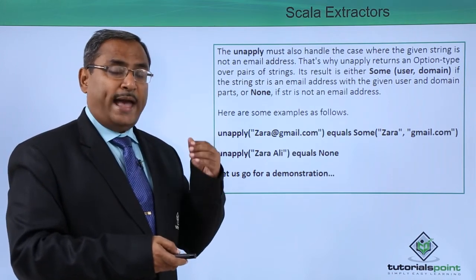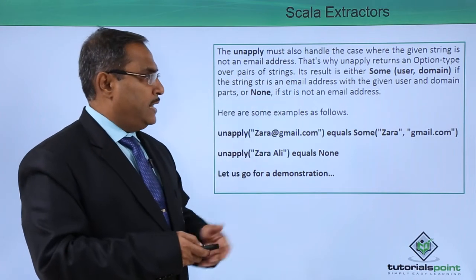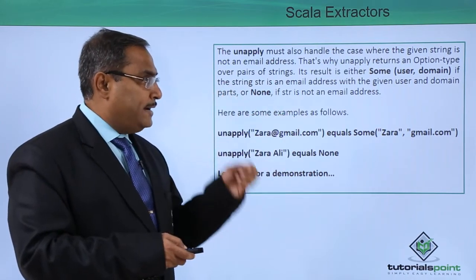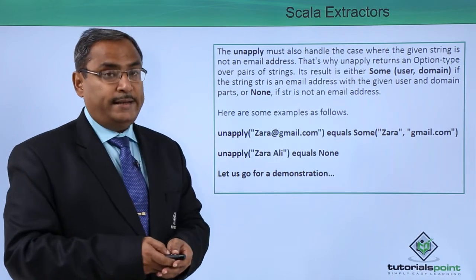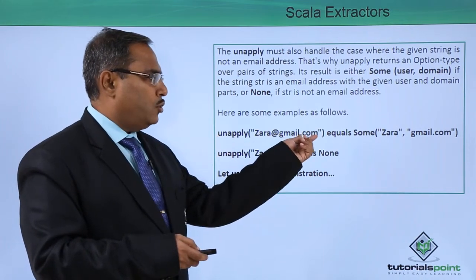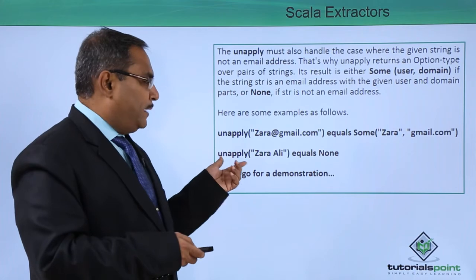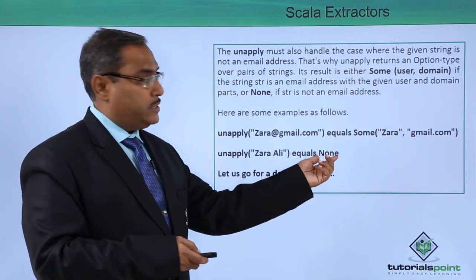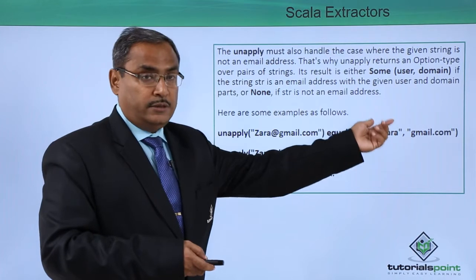We can also pass a string to unapply which is not a valid email address, and that situation has to be handled by unapply. That is why unapply returns an Option type over pairs of strings, and its result is either Some (a user and domain) if the string is a valid email address, or None if the string is not a valid email address. For example: unapply("jara@gmail.com") equals Some(("jara", "gmail.com")), and unapply("jara ali") — which is not a valid email address — equals None.